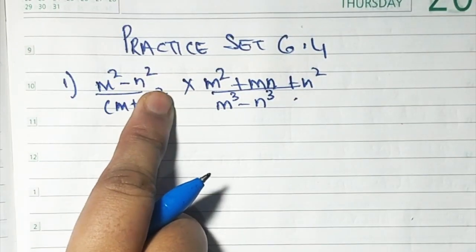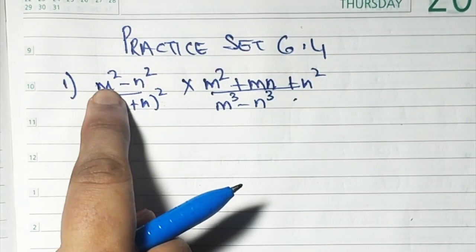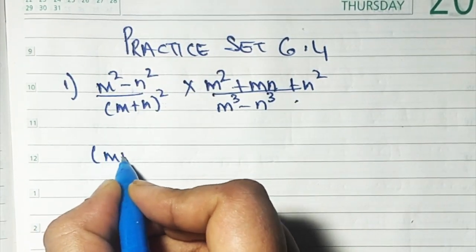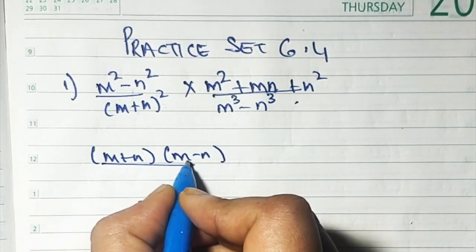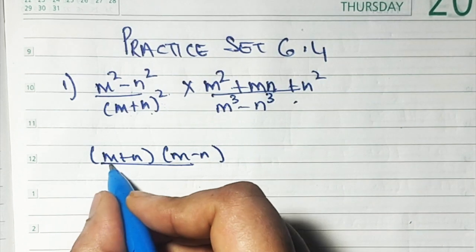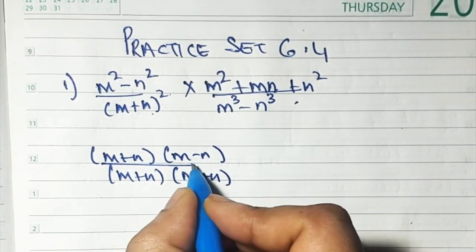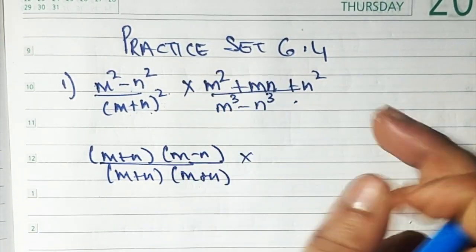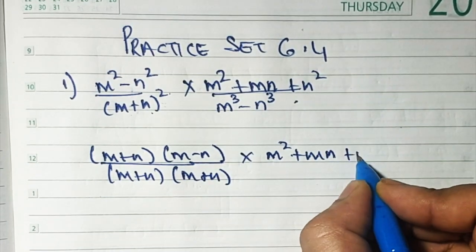The a² - b² formula is (a + b)(a - b). So for m² - n² we'll write (m + n)(m - n). Now here we have (m + n)², so we write (m + n)(m + n), and then multiply by m² + mn + n².